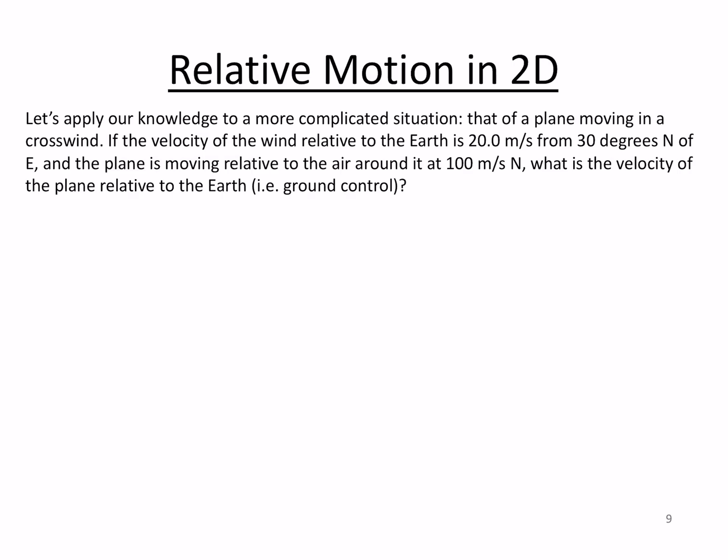Here's the situation. We've got a plane moving in a crosswind. We're given the velocity of the wind relative to the Earth at 20 meters per second from 30 degrees north of east. And the plane is moving relative to the air around it at 100 meters per second north.